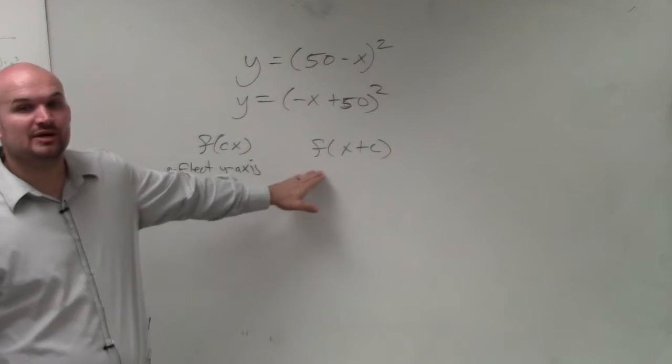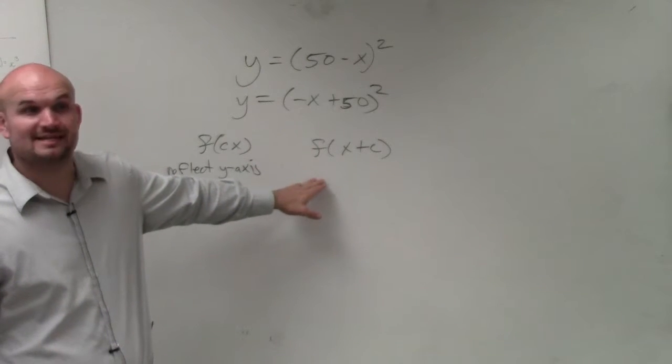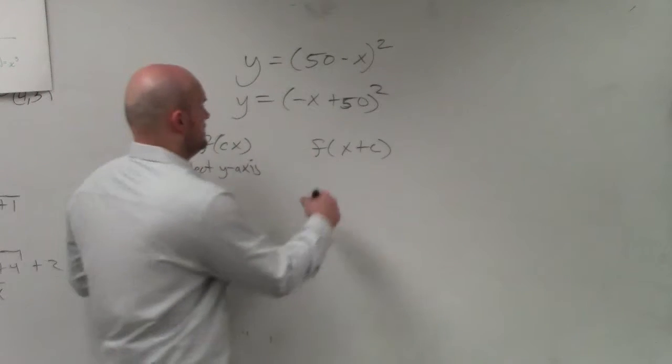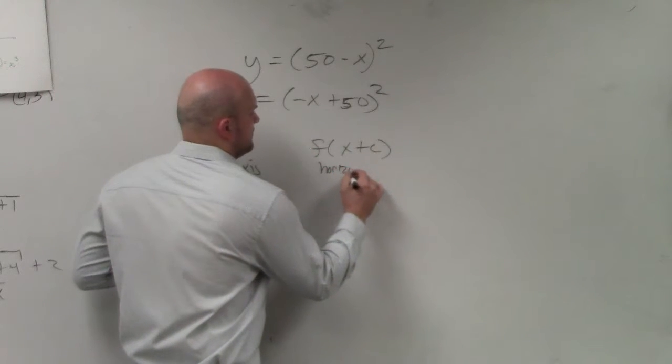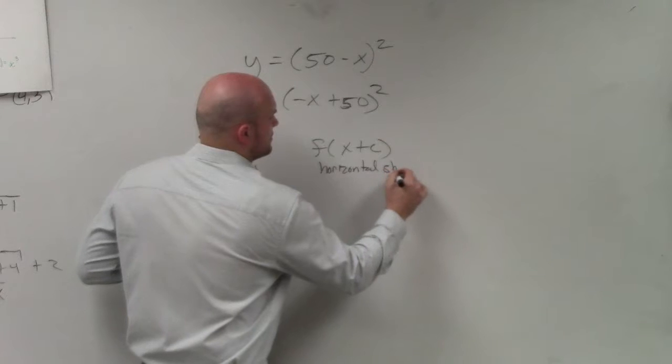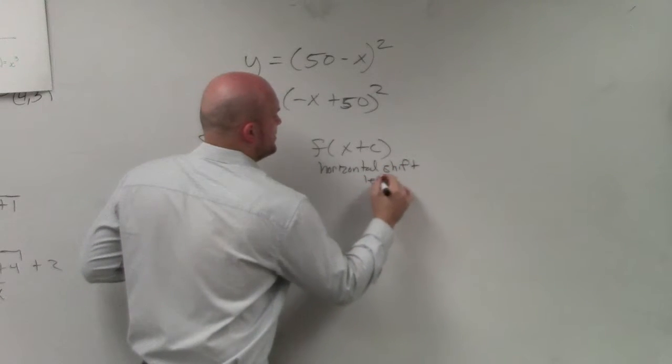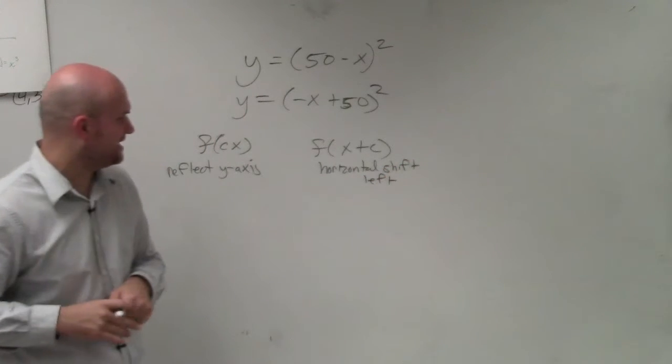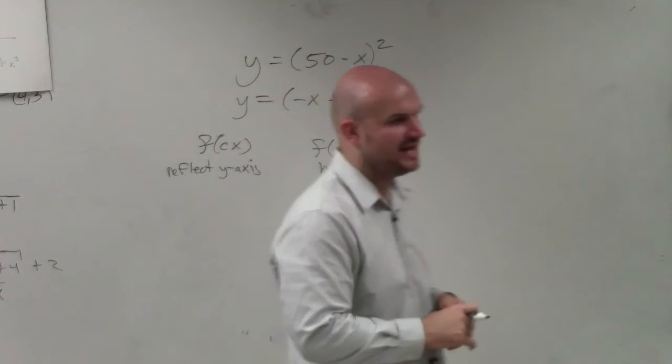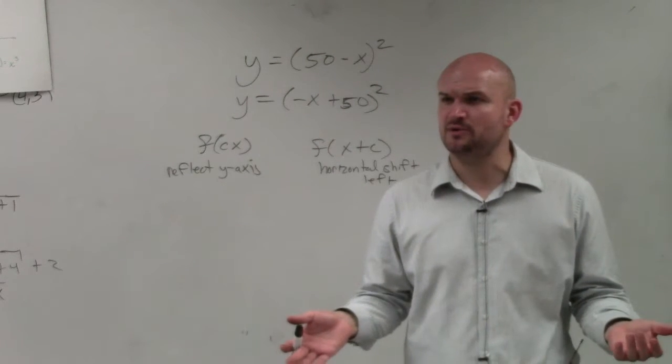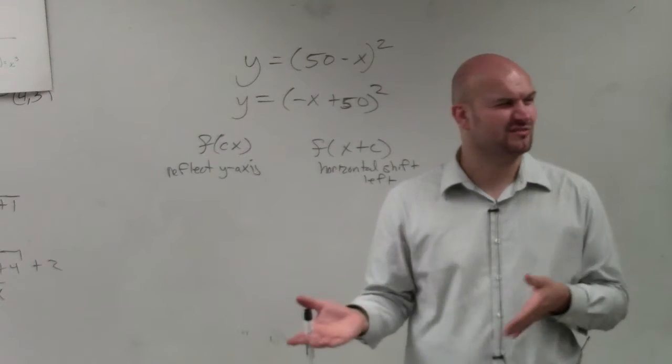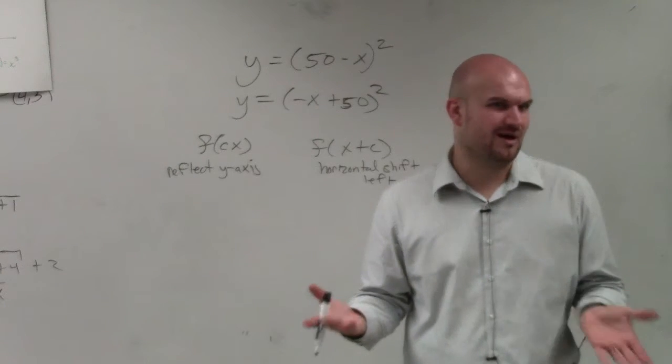And when we added a number inside the function, that was a horizontal shift to the left. So if you guys look at this, your answer would probably be reflect y-axis and horizontal shift 50 units to the left. But if you look at the answer in the back of the book, it's 50 units to the right. And why is that the case?